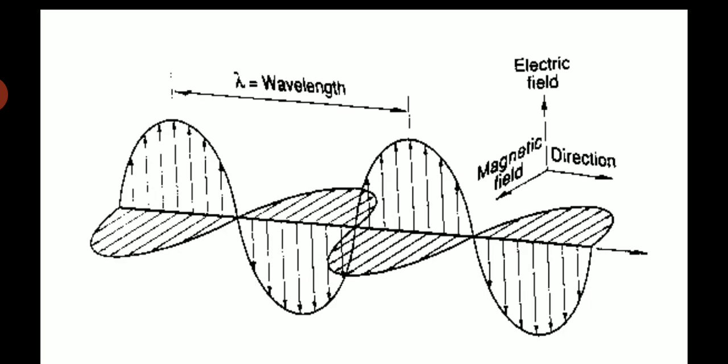This is also the diagram of electromagnetic radiation showing wavelength, electric field, direction, and magnetic field.